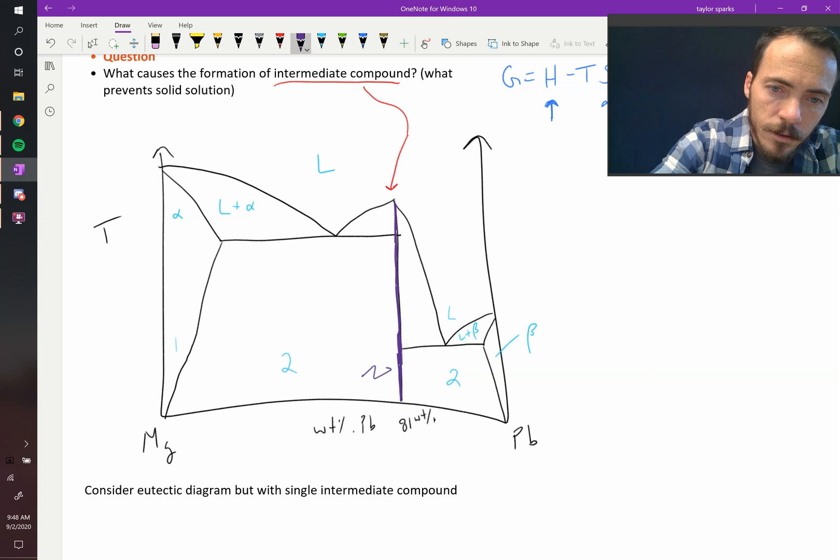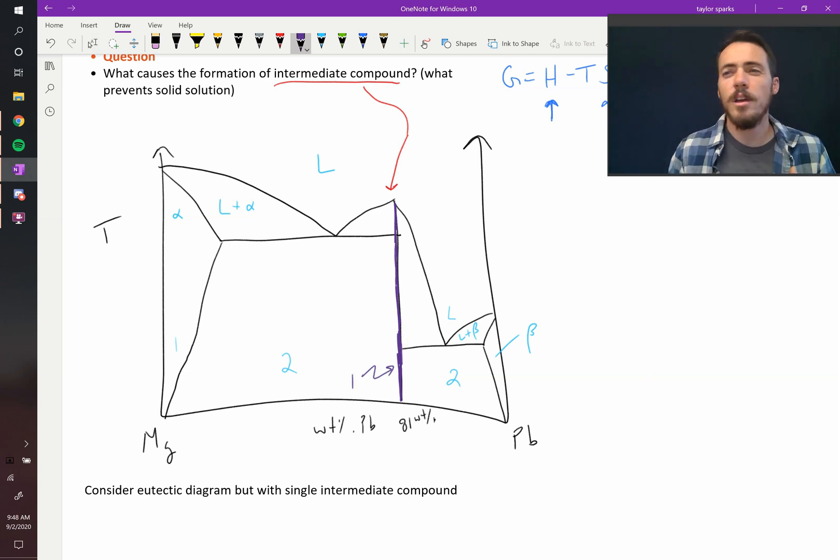It exists at a fixed stoichiometry and it doesn't allow you to change that. So therefore, this phase right here would be a single phase region. Another way to think about it is imagine that you zoomed in on that line enough. It would look like a region. You just had to zoom in on it.